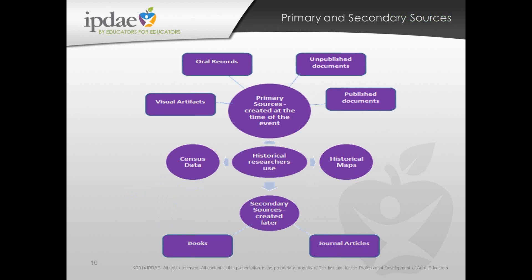We've got a graphic showing the range of primary sources — first-person accounts created at the time an event occurred, including oral records, visual artifacts, and research materials like census data and historical maps. Then we have secondary sources, which our students seem to be more comfortable with because the analysis has already been done and they're generally easier to read. But it's working with those primary sources that is a real difficulty for most of our students.